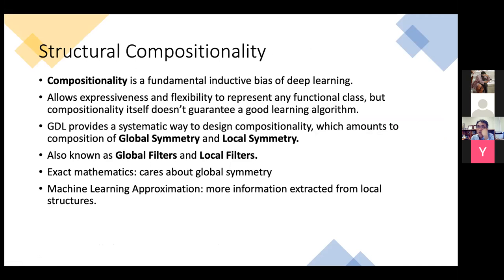In deep learning, one major success is stacking lots of layers of neural networks — each layer is like a different feature extractor. You want the feature extractors to respect the symmetry of the domain. There are two different kinds of symmetries: global symmetry and local symmetry. Local symmetry considers your local filters to be node-order invariant with respect to the one-hop neighborhood. Global symmetry regards permutation of the entire graph structure. You have global filters and local filters, similar to convolutional neural networks with local and global poolings.